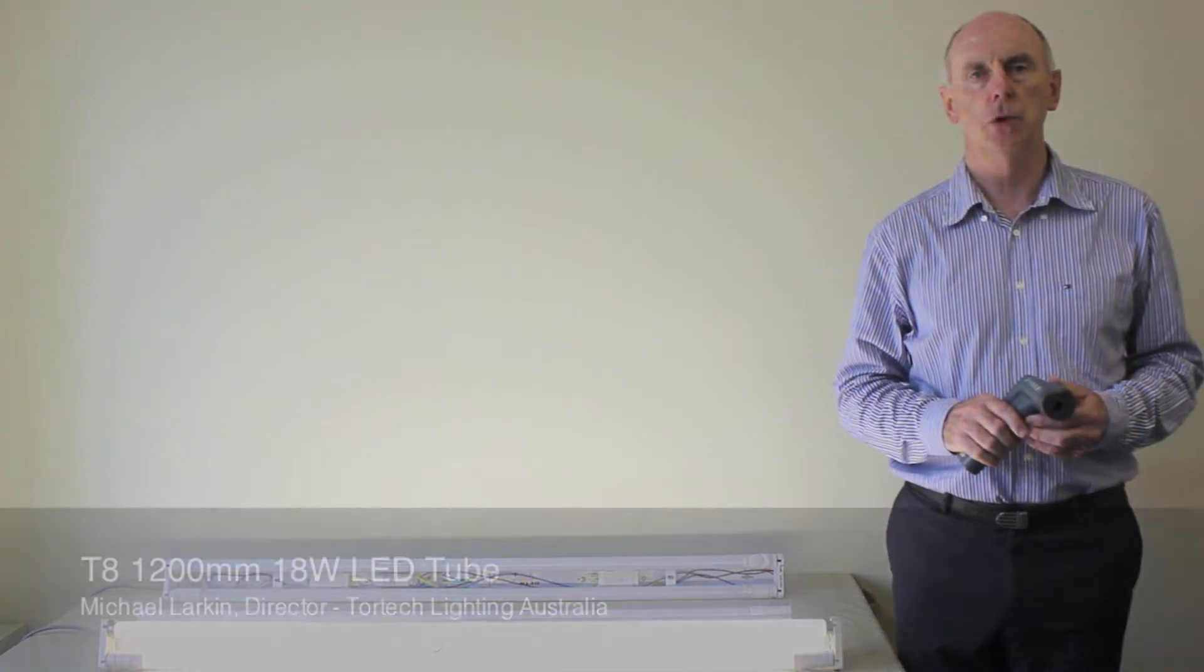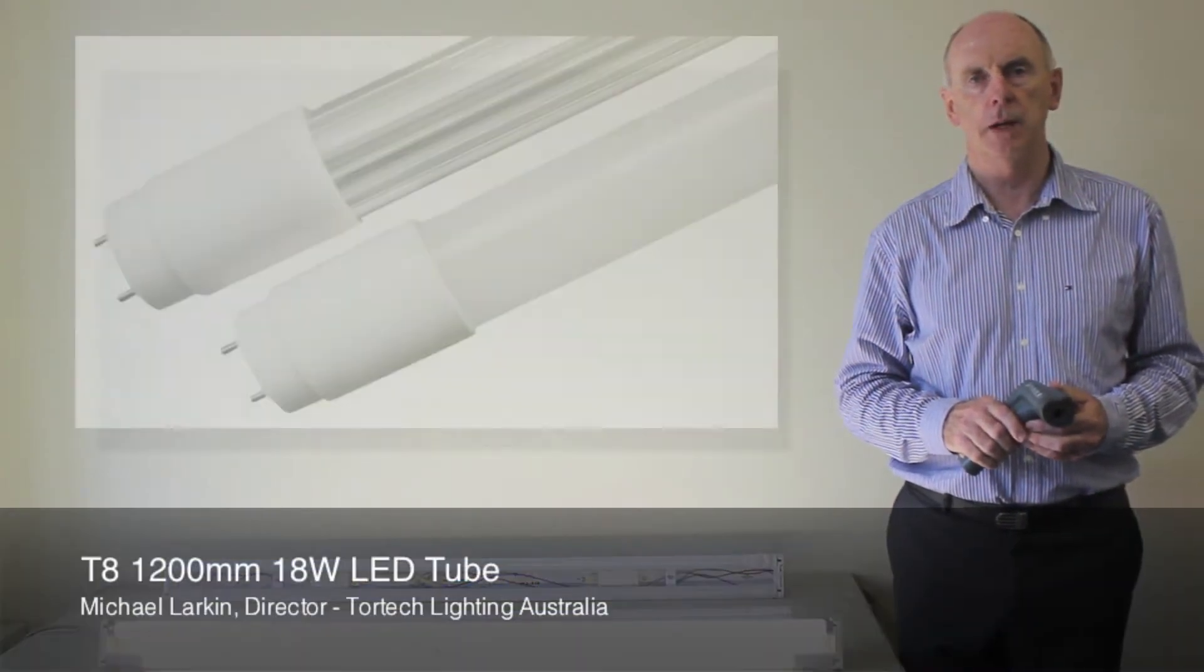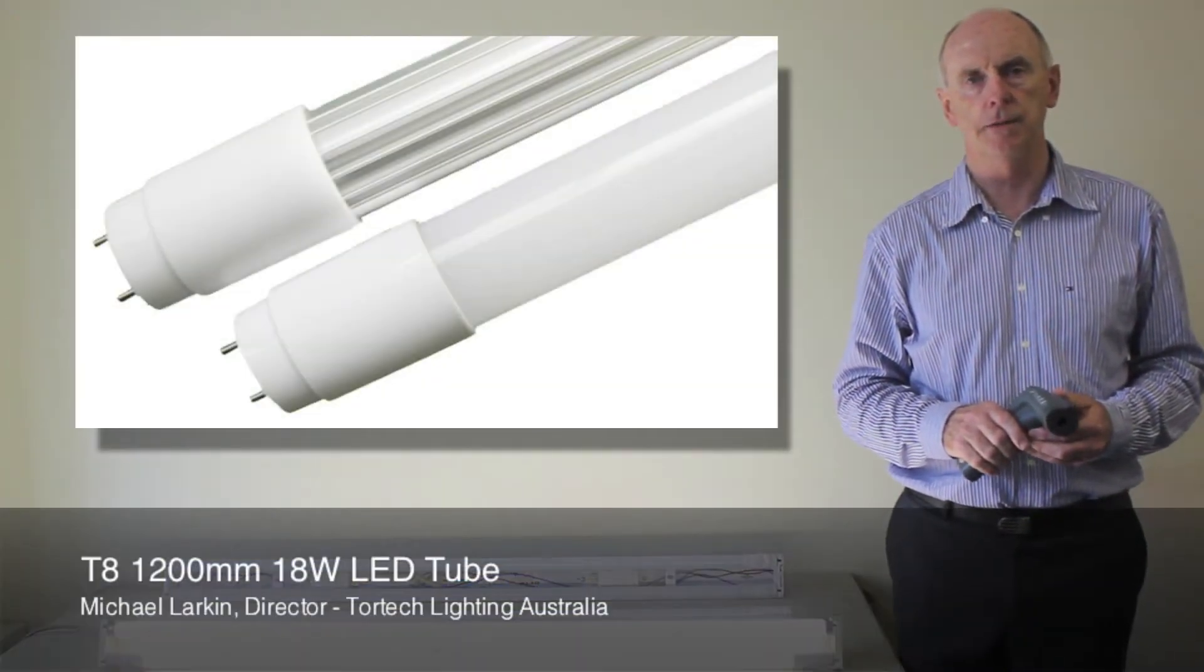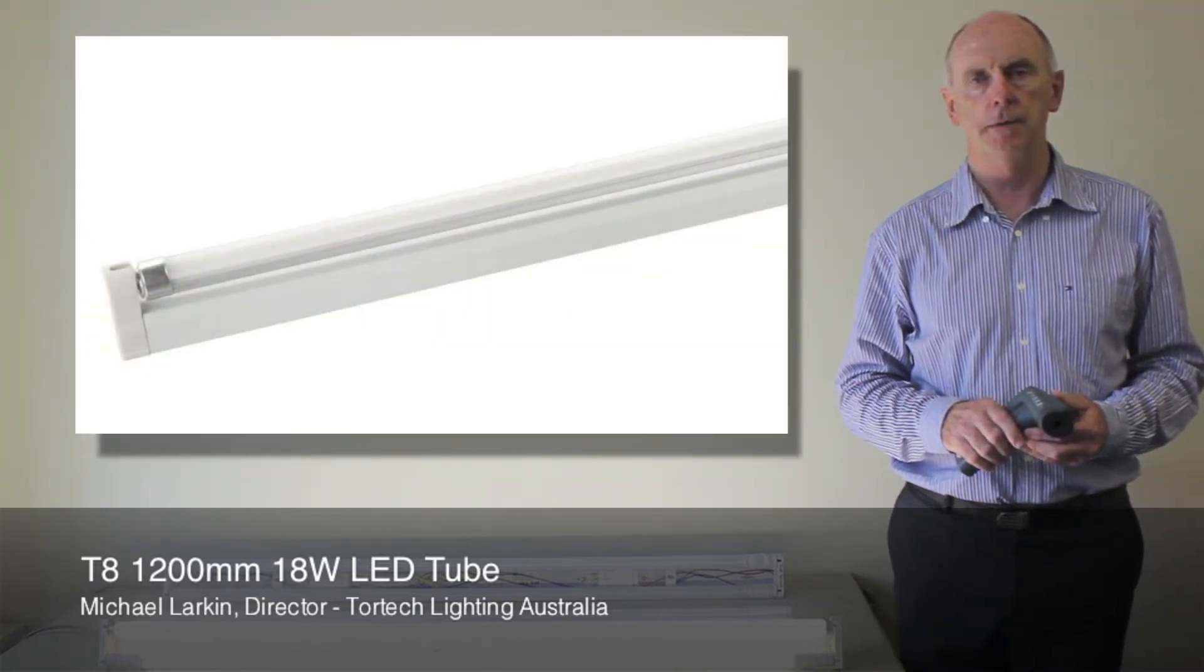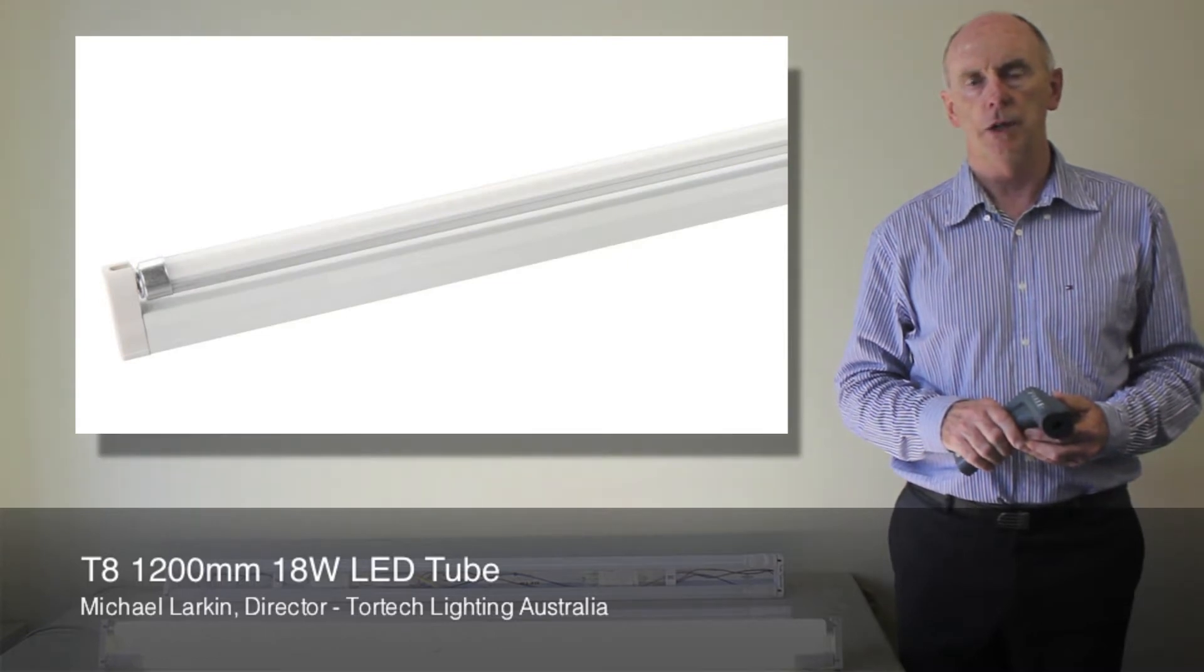My name is Michael Arkin from TorTech Lighting. Today we're going to talk about the comparison of normal fluorescent tubes with LED tubes. We're going to be looking at standard 1200mm fluorescent tubes which are 36 watt compared to an 18 watt LED tube.